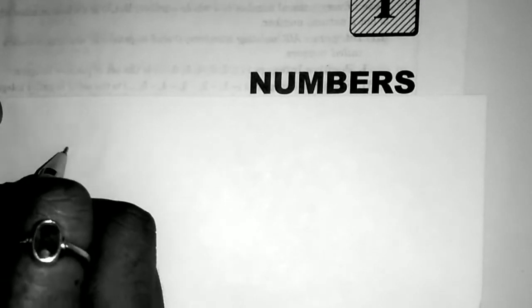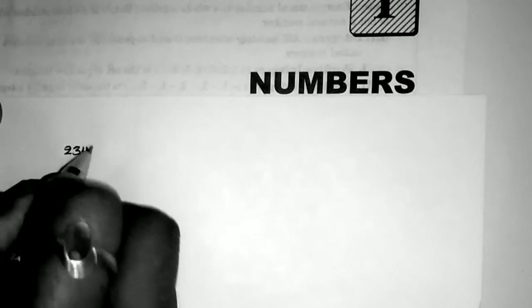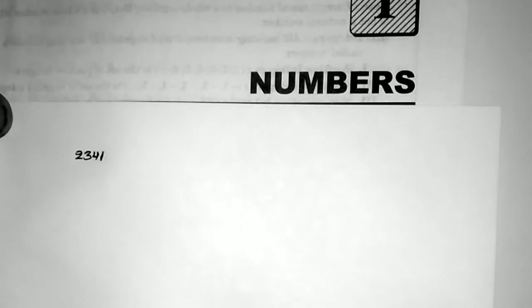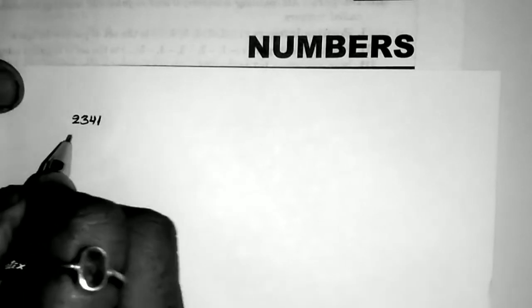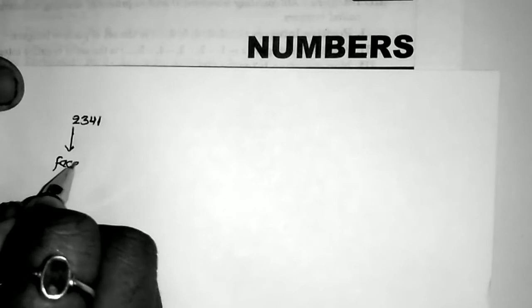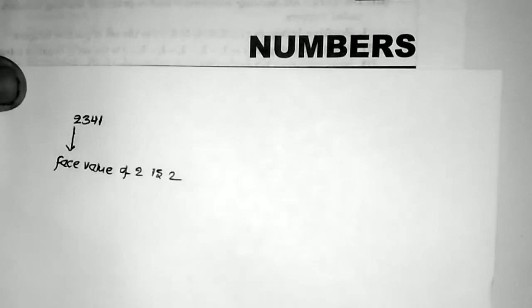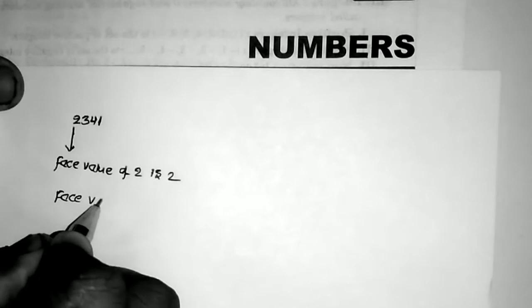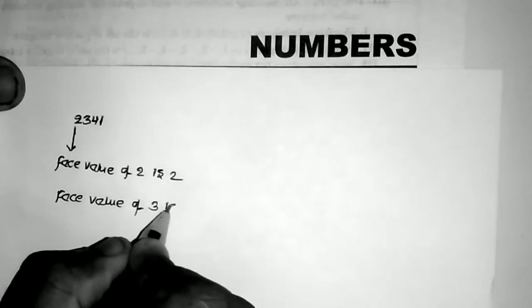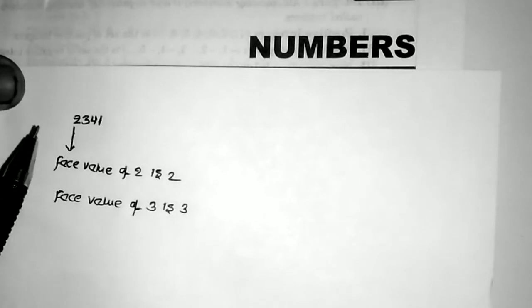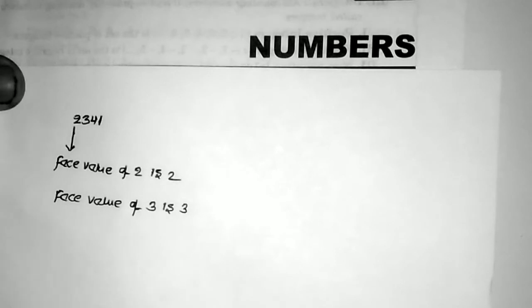First I am explaining different types of numbers. For example, take the number 2341. What is the place value and face value of this number? Face value of 2 is equal to 2, face value of 3 is equal to 3, face value of 4 is equal to 4, face value of 1 is equal to 1. Face value means the number itself is called the face value.